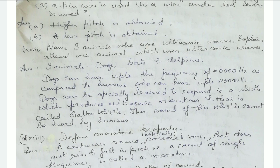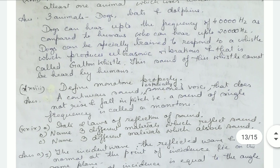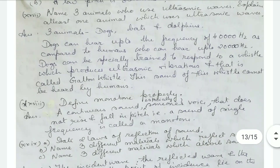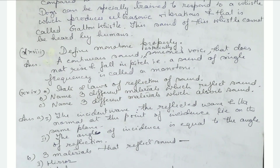Name three animals that use ultrasonic waves and explain at least one. The three animals are dogs, bats, and dolphins. Dogs can hear up to a frequency of 40,000 Hz, compared to humans who can only hear up to 20,000 Hz. Dogs can be specifically trained to respond to a whistle that produces ultrasonic vibrations, known as the Galton whistle. This sound cannot be heard by humans.